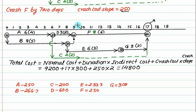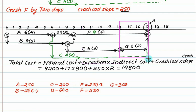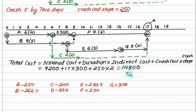In the next bracket, F plus E together is also more than 300, so that does not give an economical solution. Finally, in the last bracket, F and G must be crashed concurrently. The cost of F plus G also exceeds 300, so no further economical solution is possible. Therefore, your optimum cost is 14,800 and the optimum duration is 17 days.